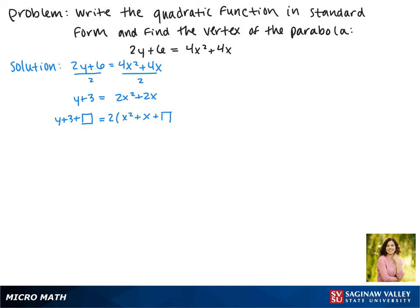Now we have x squared plus x plus some number. Remember that to complete the square we do b over 2 squared, so in this case that's 1 half squared, which is 1 fourth.